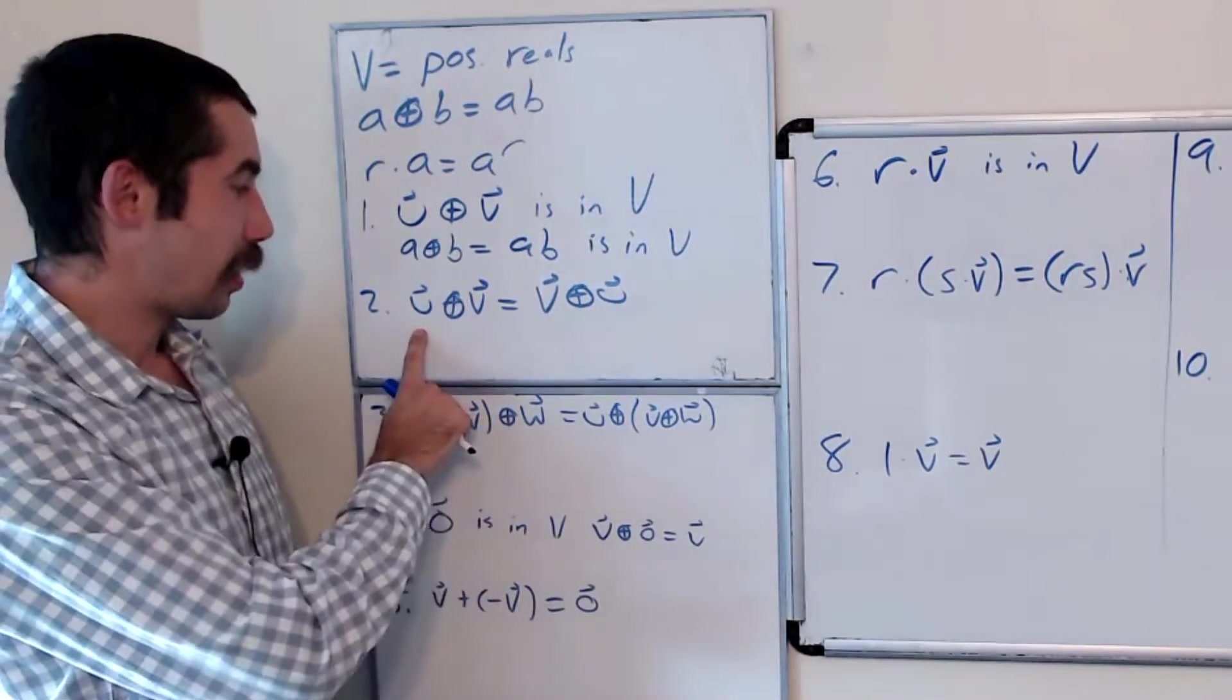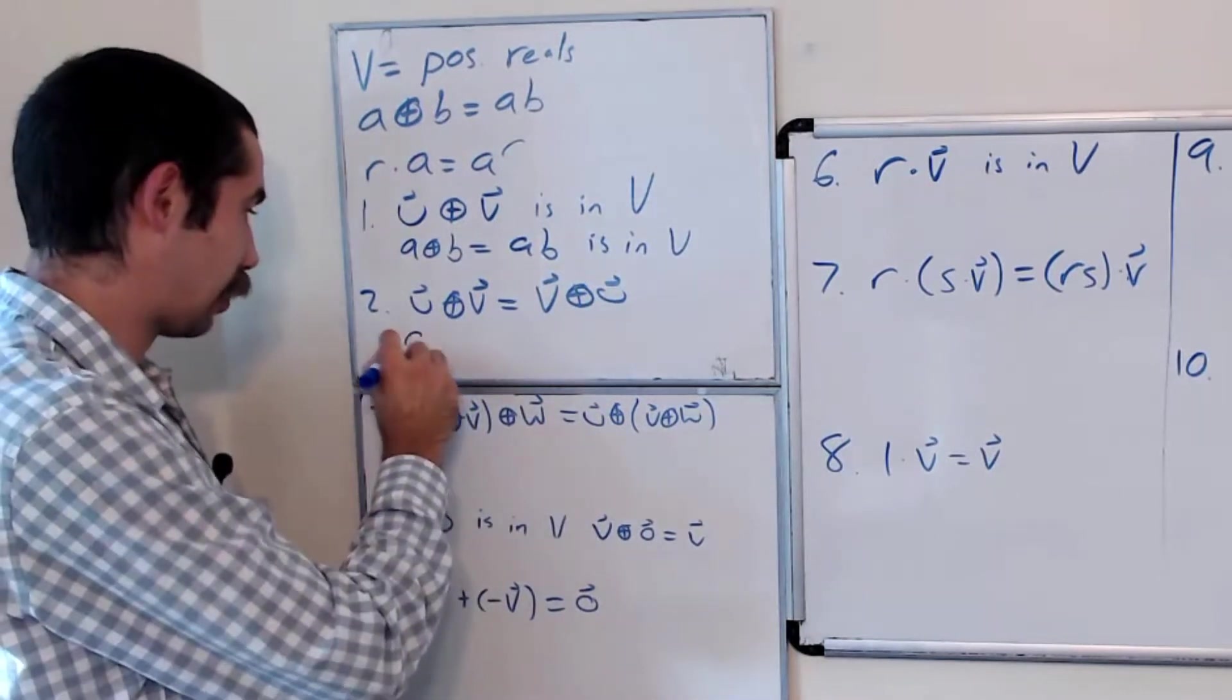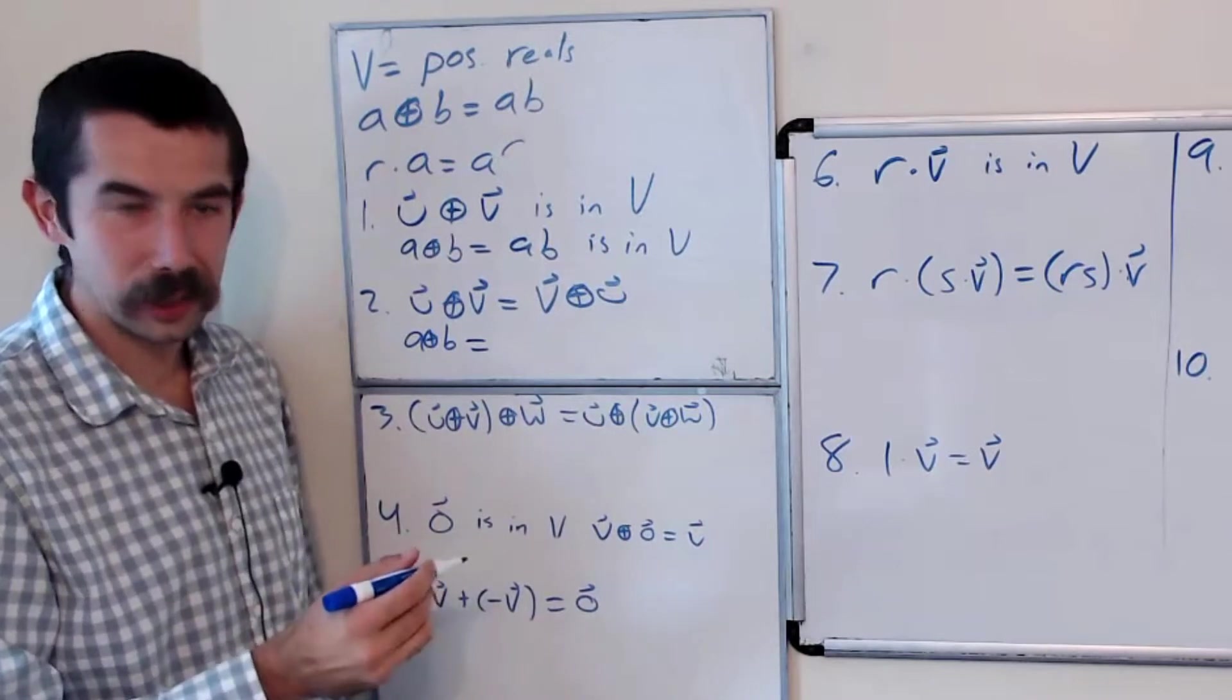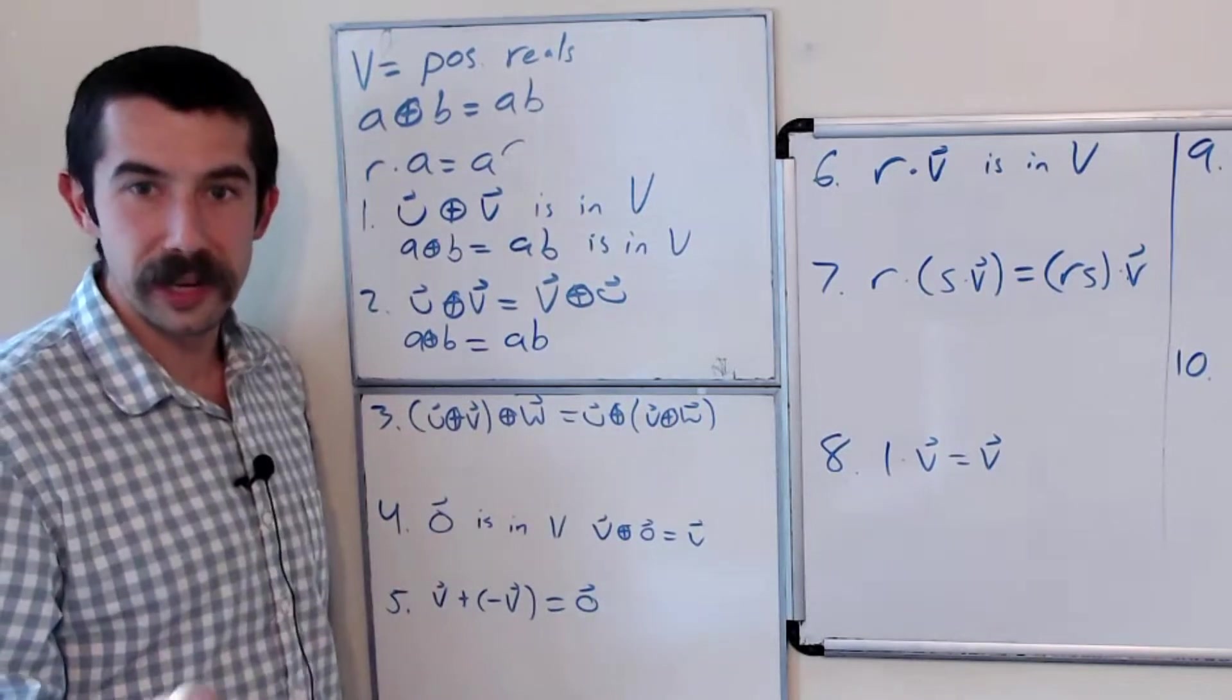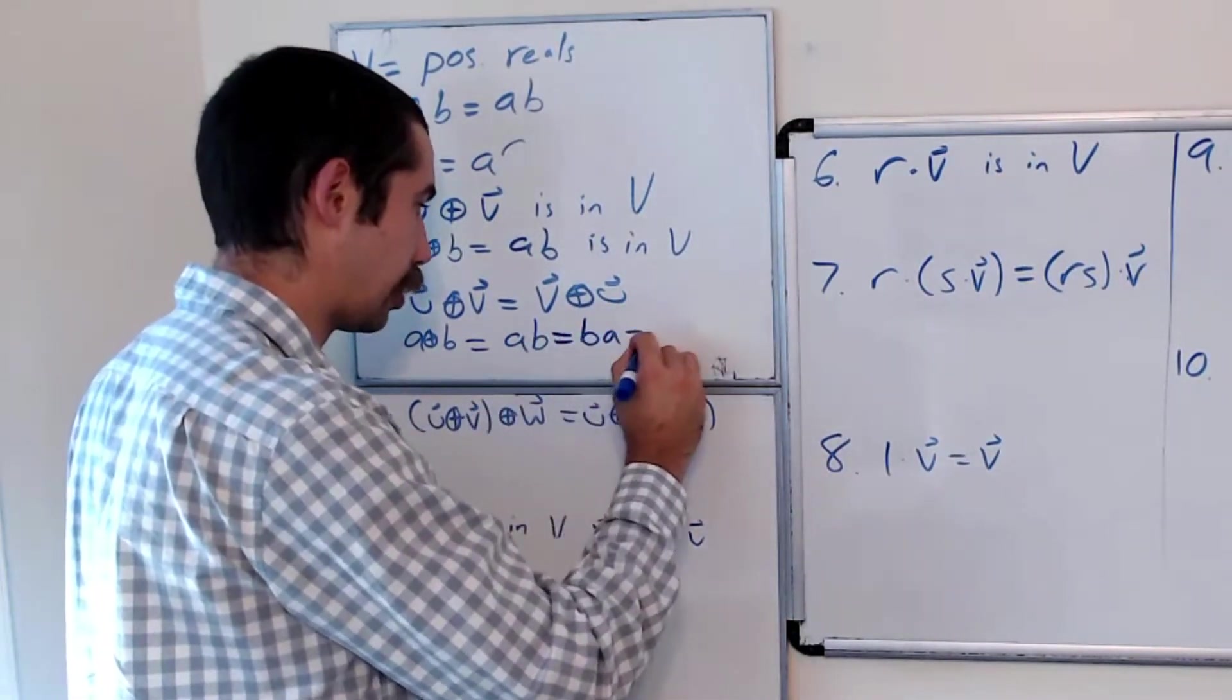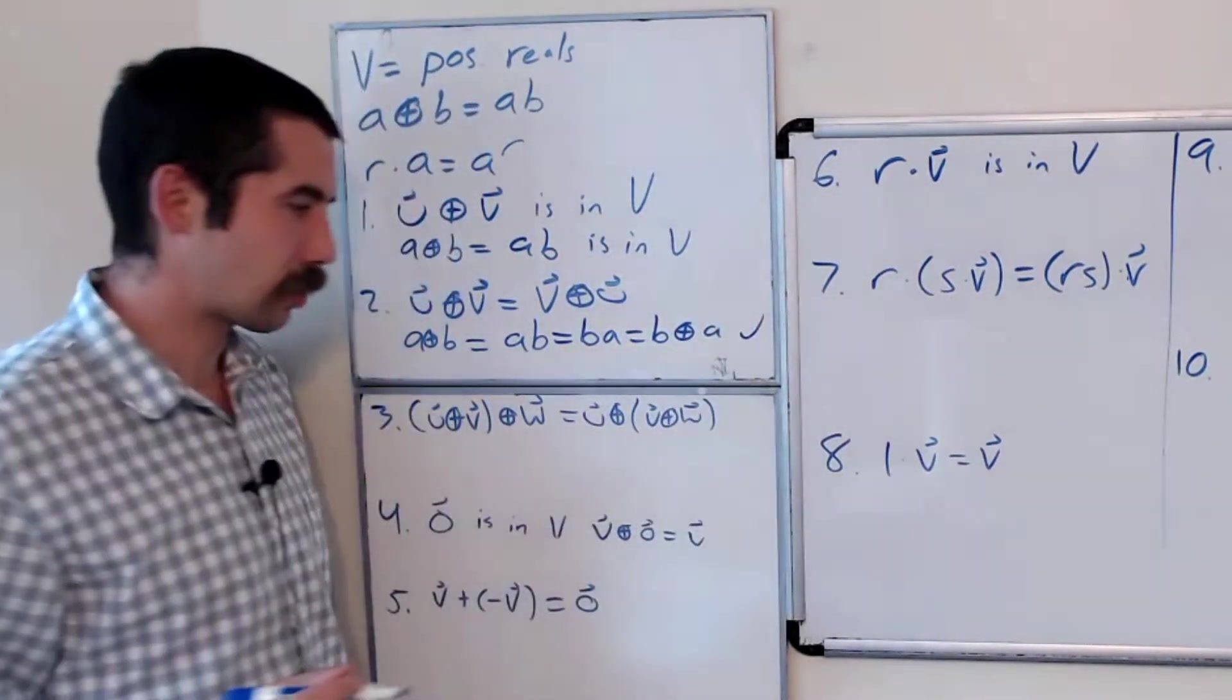Condition two is addition is commutative. So let's take A⊕B. We know by definition that's AB. But multiplication of real numbers is commutative. So that's BA, which is equal to B⊕A. So condition two holds.